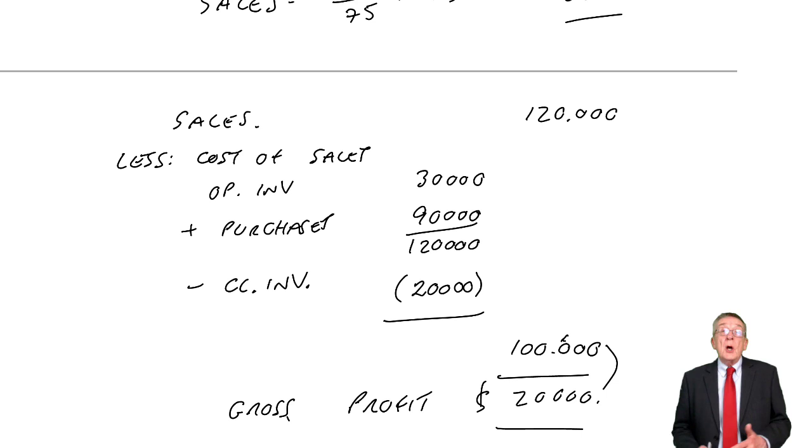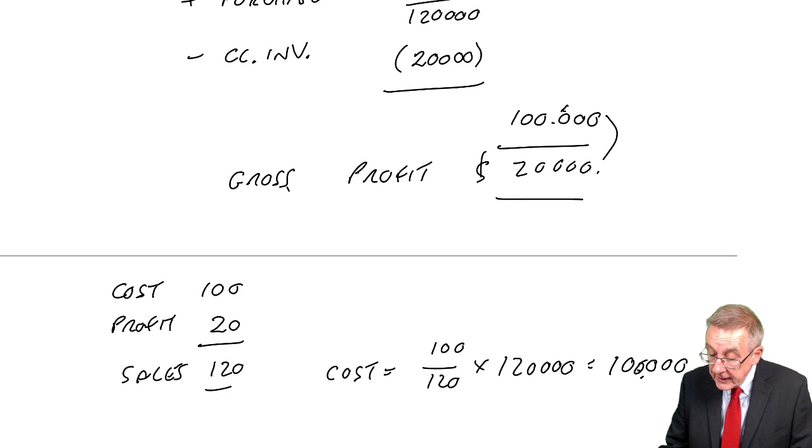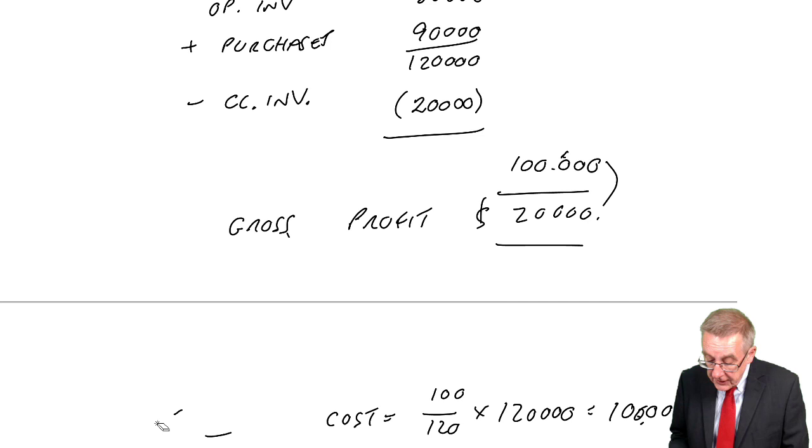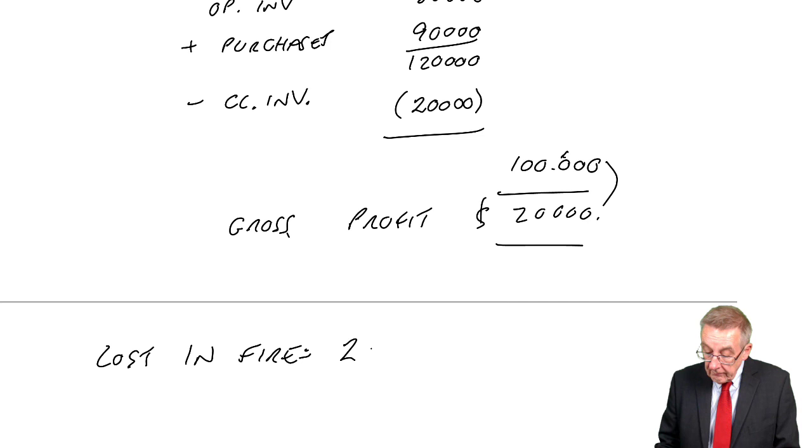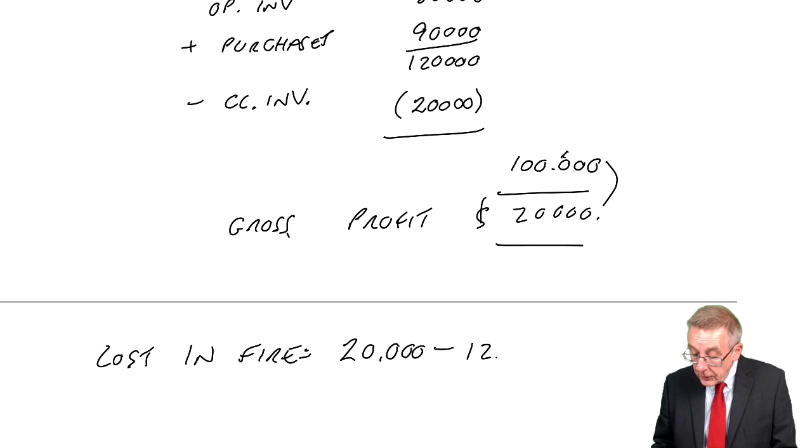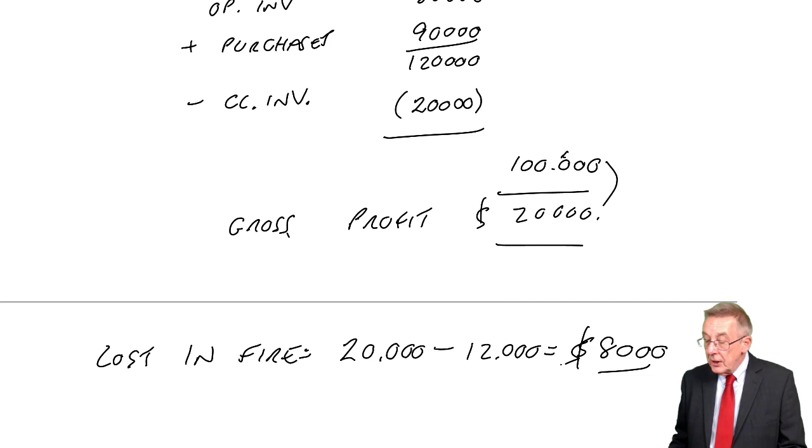And so I immediately know how much was lost in the fire. You see, it should have been 20 if there had been no fire. What was it? The question tells us it was only 12,000. And so lost in the fire, 20,000 is what it should have been. 12,000 is all that was left. And so lost in the fire was inventory worth 8,000 or a cost of 8,000.